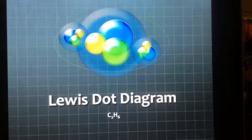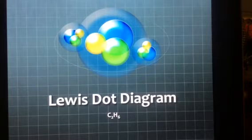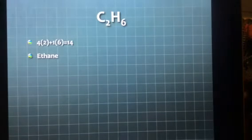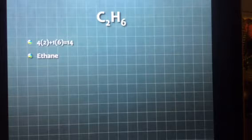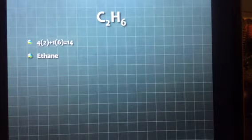We're going to be doing the Lewis-Dot diagram for C2H6, more commonly known as ethane. So C2H6 contains two carbon molecules and six hydrogen molecules.